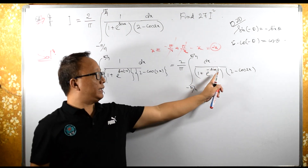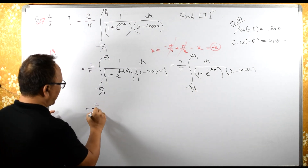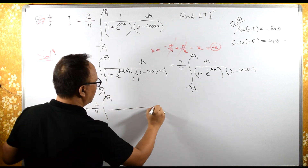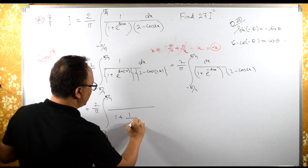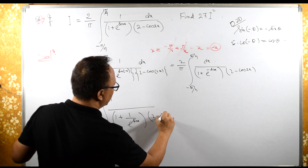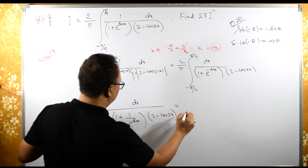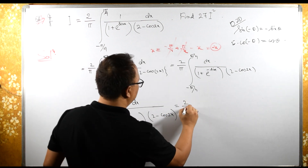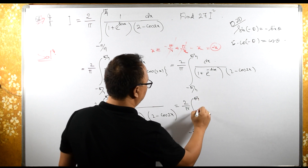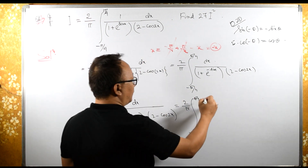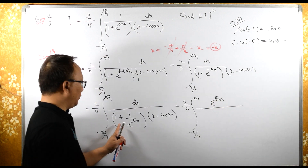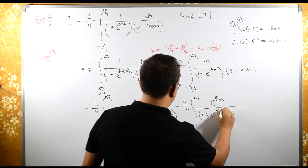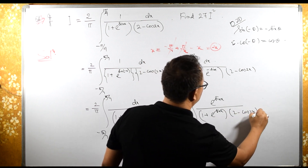Now e raised to minus sine x is 1 by e raised to sine x. So we have 2 by pi, integral from minus pi by 4 to pi by 4, 1 upon 1 plus 1 by e raised to sine x, times 2 minus cos 2x dx. Taking LCM, this becomes e raised to sine x upon e raised to sine x plus 1, that is 1 plus e raised to sine x, times 2 minus cos 2x dx.